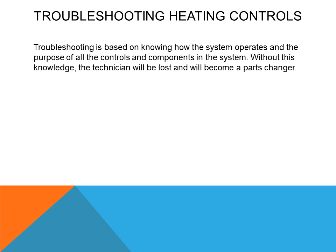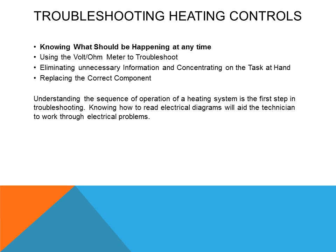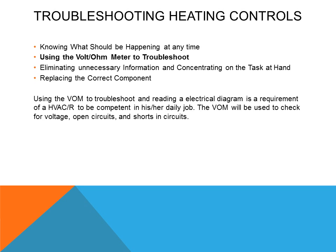Troubleshooting is based on knowing how the system operates and the purpose of all the controls and components in the system. Without this knowledge, the technician will be lost and will become a parts changer. Understanding the sequence of operation of a heating system is the first step in troubleshooting. Knowing how to read electrical diagrams will aid the technician in working through electrical problems.